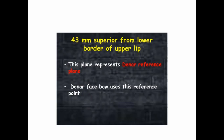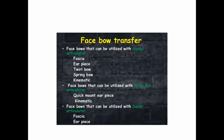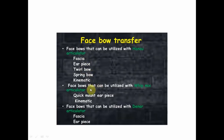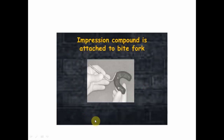Different types of facebows can be utilized with different articulators. With the Hanau articulator — a fully adjustable articulator — facial type arbitrary facebow, earpiece type arbitrary facebow, Chilbow, Springbow, and kinematic facebow can be used. The facebow that can be used with the Whip Mix articulator is the Quick Mount earpiece facebow and the kinematic facebow. For the Denar articulator, patient type and earpiece type of facebow are used.